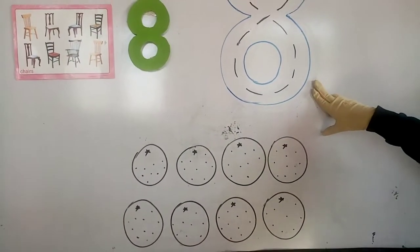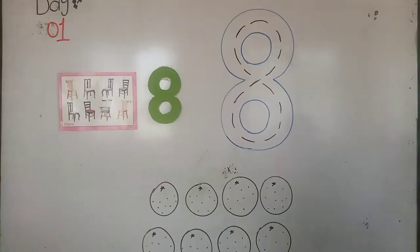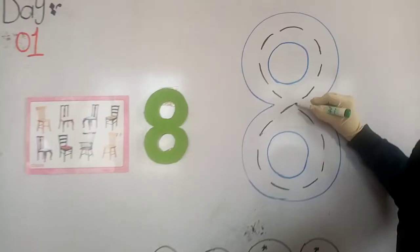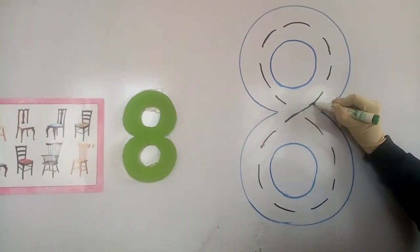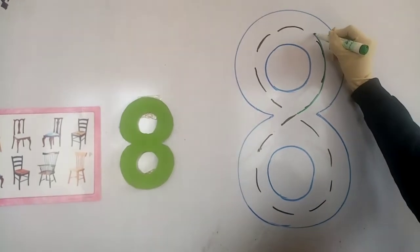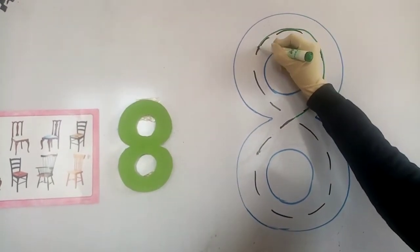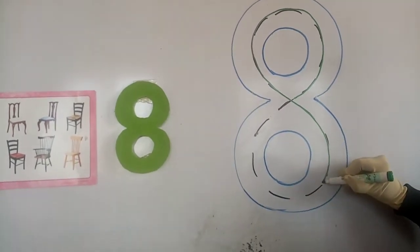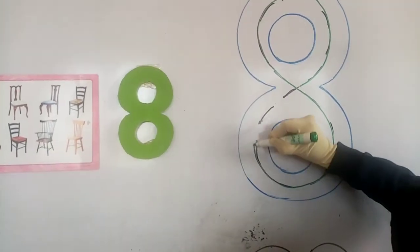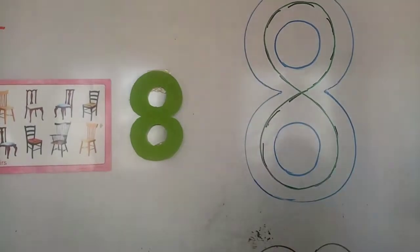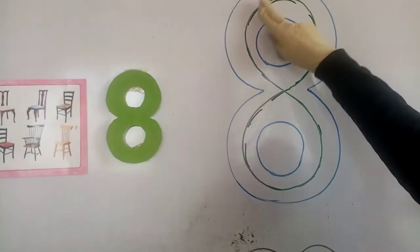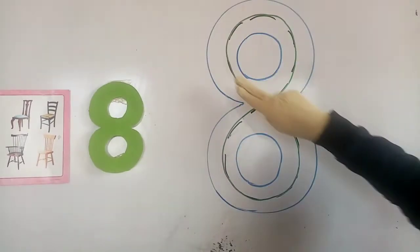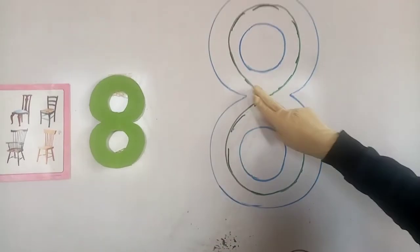Okay, how do we write eight? So, how we write eight? First, start with the... Round and round. Round and round. Eight. Round and round. Eight.